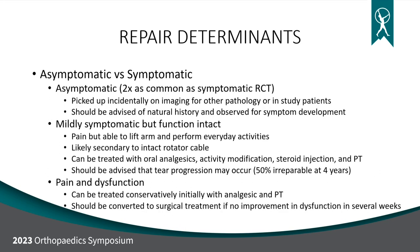Symptomatic versus asymptomatic: patients without pain or function loss — typically found incidentally on imaging — we don't operate on, but advise them to watch for pain, increasing weakness, or dysfunction as signs of progression. Mildly symptomatic patients with intact function can be treated non-surgically, though the tear can still progress to irreparability. For older, less active patients, non-surgical treatment first is reasonable. For more active, younger patients depending on occupation, we'll likely intervene surgically earlier.